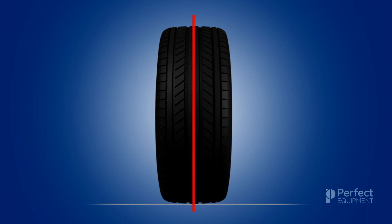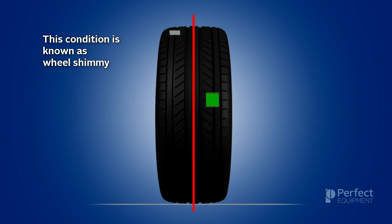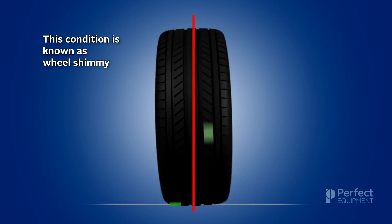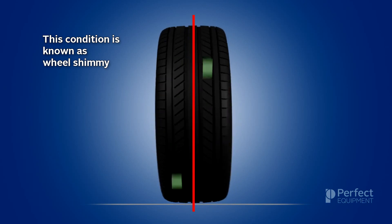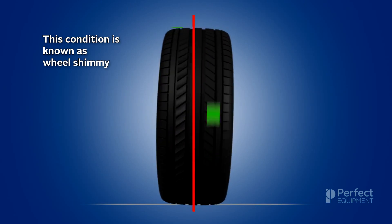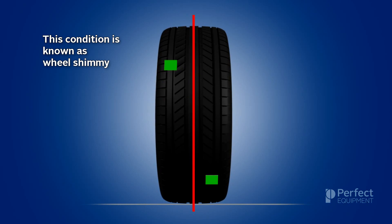Dynamic imbalance becomes even more of a problem when there is an imbalance present on both sides of the center line. Sometimes these imbalances are side-by-side and other times they are located at completely different locations on the tire. When at full speed, this wobble is known as wheel shimmy and becomes most evident when the wheel is being turned around a curve. At highway speeds, wheel shimmy can produce a severe side-to-side motion and do severe damage to vehicle suspension systems.